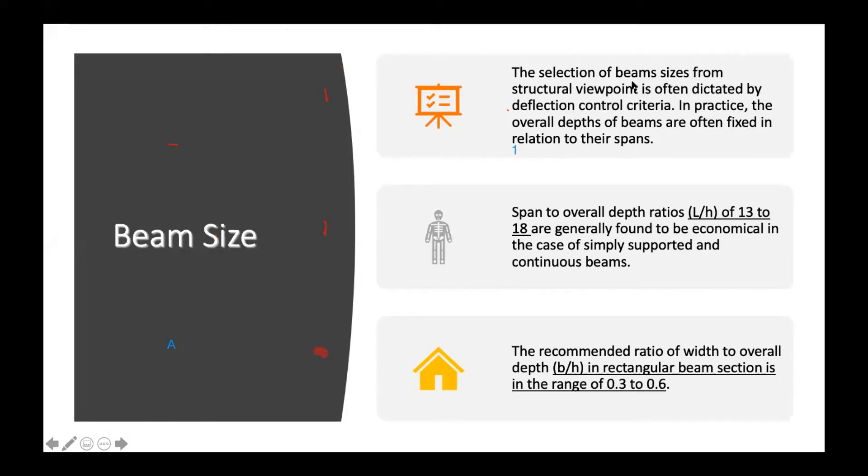The selection of beam size from the structural viewpoint is often dictated by the deflection control. If you see yesterday, we have calculated the deflection. So in order to obtain the size of the beam, it must be based on the deflection control. So deflection control yesterday, we calculated that L over D allowable must be greater than L over D actual.